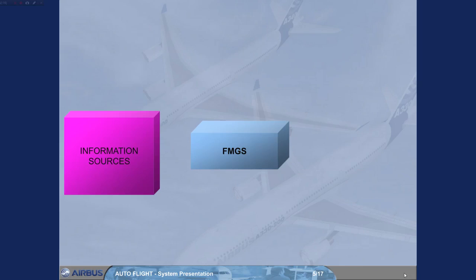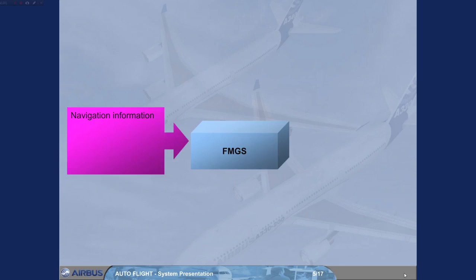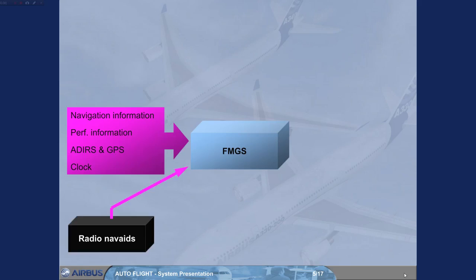The FMGS receives navigation information, which contains details of airfields, nav-aids, airways, routes, waypoints, procedures, SIDs, STARs, approaches, missed approaches, etc. It also receives aircraft performance information, the Air Data and Inertial Reference System (ADIRS), and the Global Positioning System (GPS) for position and dynamic information. Additionally, it receives clock and radio navigation information.